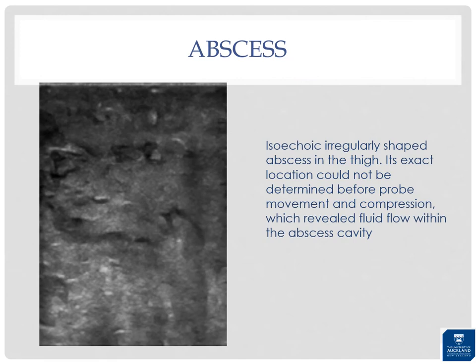An abscess may present as a soft tissue mass, typically with clinical signs of infection such as erythema, warmth, tenderness, and elevated white blood cell count. Ultrasound is effective in identifying extremity abscesses, especially superficial ones, though deep infections may require MRI. Abscesses most commonly appear hypoechoic and heterogeneous. A very purulent abscess may have numerous internal echoes and be isoechoic or slightly hyperechoic. Use transducer compression to see movement of debris and pus within the abscess.